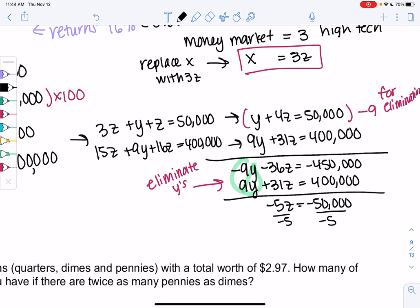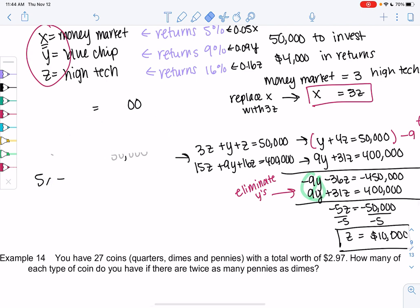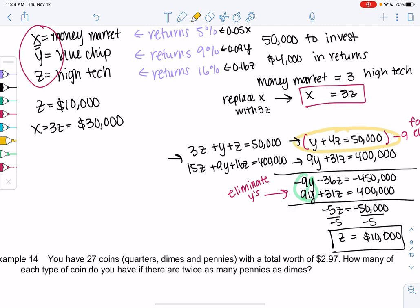So we'll invest 10,000 in that high-tech fund. Let's go ahead and find the remaining ones. Z is 10,000, so 10,000 in the high-tech. We know X is 3 times Z, so that'll be 30,000. And then Y, we'll just use one of these equations. I'll probably use Y plus 4Z equals 50,000. So Y equals 50,000 minus 4Z. So Y is 50,000 minus 40,000 or 10,000.